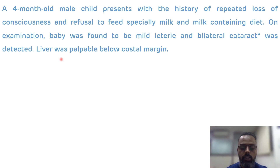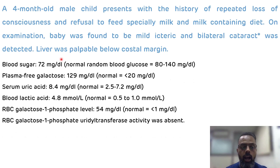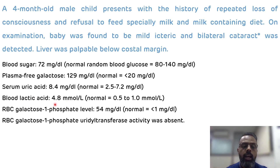Now, the investigations done: blood sugar level was 72 mg/dL, which is below normal. Plasma free galactose level is 129 mg/dL, which is elevated. Serum uric acid is 8.4 mg/dL, elevated. Blood lactic acid is 4.8 mmol/L, elevated. RBC galactose-1-phosphate level is 54 mg/dL, elevated. RBC galactose-1-phosphate uridyltransferase activity was absent.